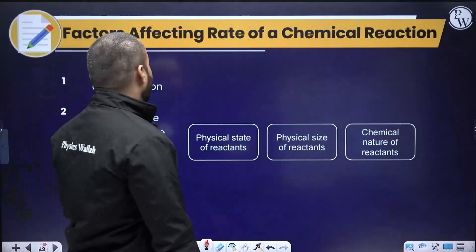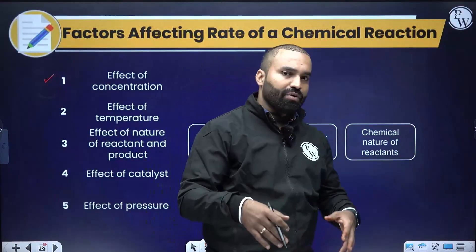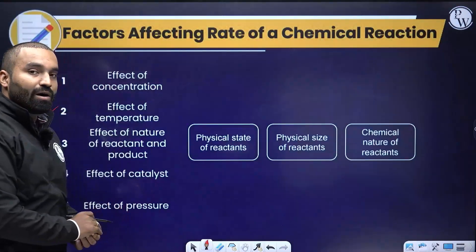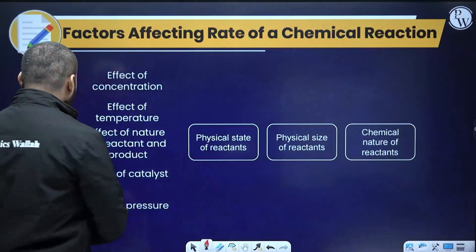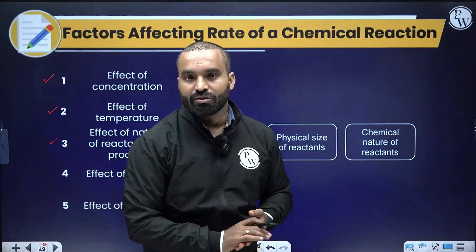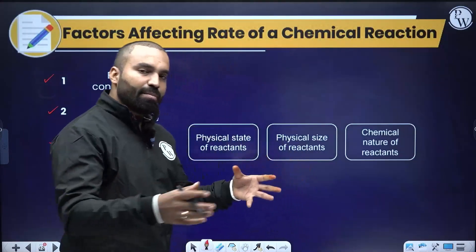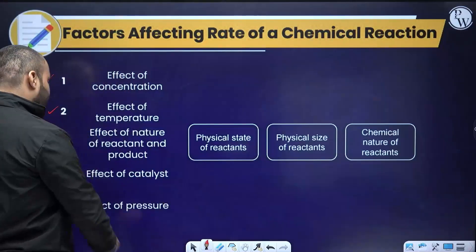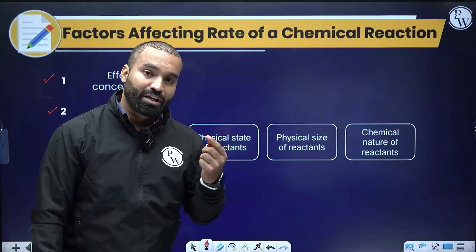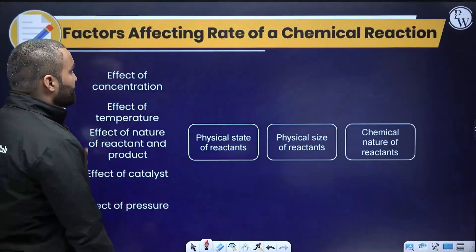Factors affecting rate of reaction: (1) Concentration — higher concentration generally increases rate; (2) Temperature — how temperature affects rate; (3) Nature of reactants and products — solid-solid reactions are very slow, solid-liquid are moderate, gas-gas are very fast; (4) Catalyst — positive catalysts increase rate, negative catalysts decrease rate; (5) Pressure. We will now discuss each of these.